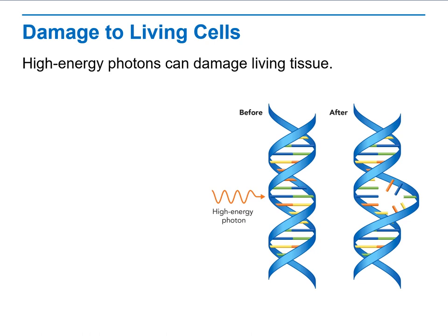Damage to living cells. High energy photons can damage living tissues. Why do we sometimes get sunburned even though we are sitting in the shade? The ultraviolet radiation from the sun can reflect off the ground or pool into your skin. We know that skin cancer, such as melanoma, can be caused by excessive damage to the DNA of skin cells.